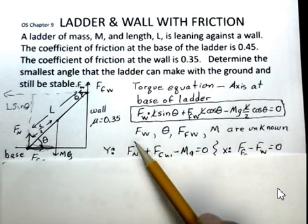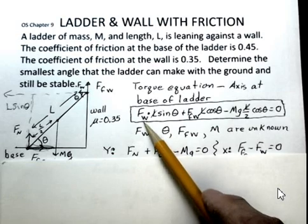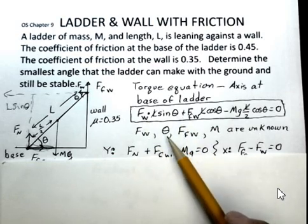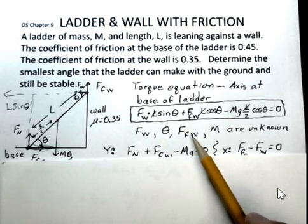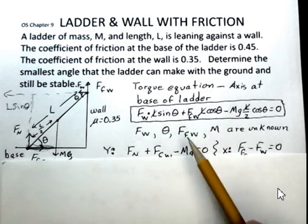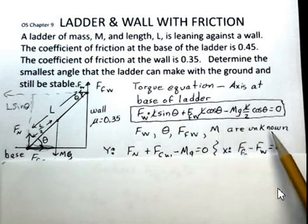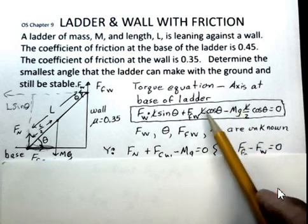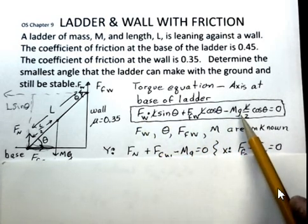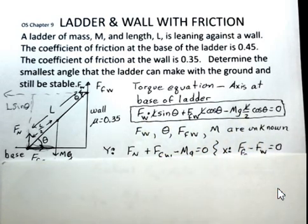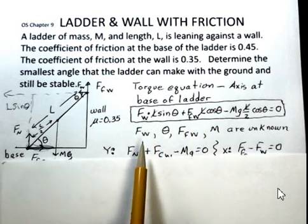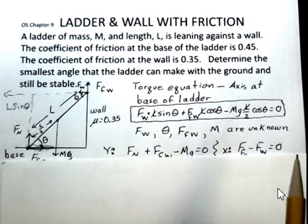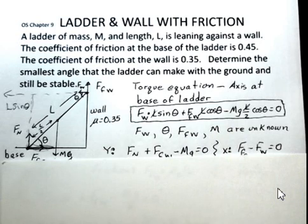Scanning across the torque equation, Fw is unknown, theta is unknown — that's the real unknown we want to solve for — the friction force at the wall is unknown, and the mass M is unknown. So we have one equation with four unknowns. We need some other equations to help solve this.